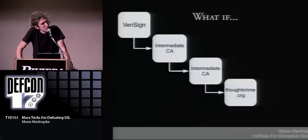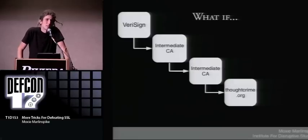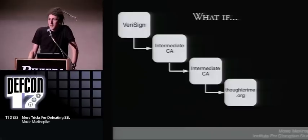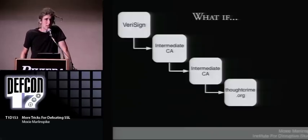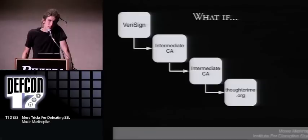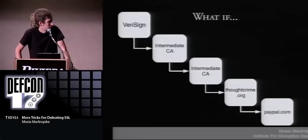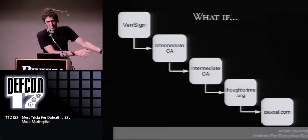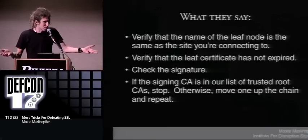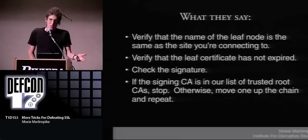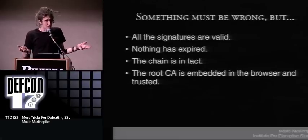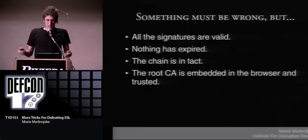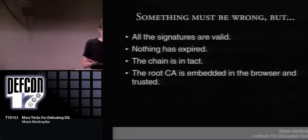Here's what I mean. Say you have a fairly common picture: some root certificate authority, a couple of intermediate CAs, and then your leaf node that identifies a website you own, like thoughtcrime.org. What is to stop you from creating another certificate for some other website — paypal.com — signing it with your leaf certificate, and then passing that whole chain to any client? If you go back and look at what people say about how you validate these things, we haven't really done anything wrong. All the signatures are valid, nothing's expired, the chain is intact, and the root CA is embedded in the browser.